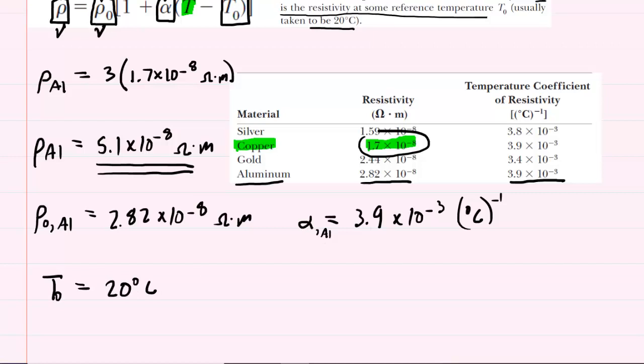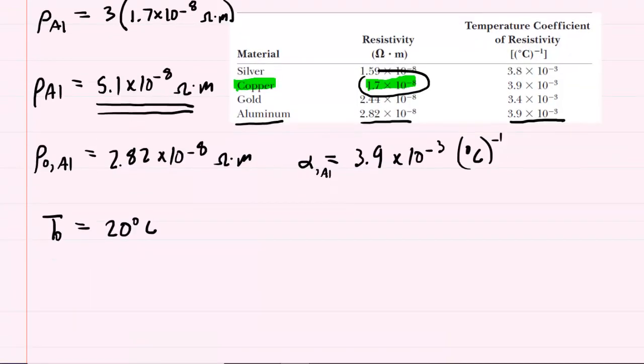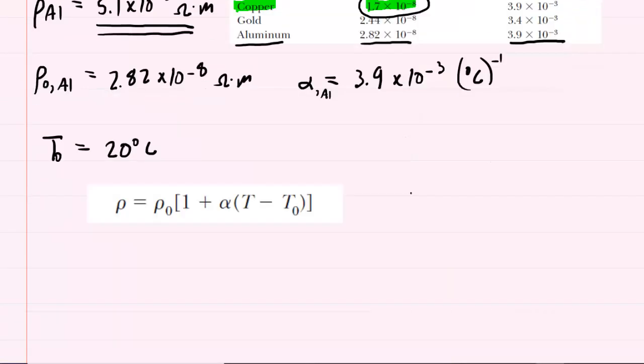So we actually have all of the values we need to solve for this temperature that we've highlighted in green here. So let's take another look at the equation and see if we can rearrange it to solve for T.